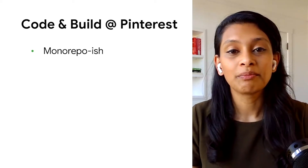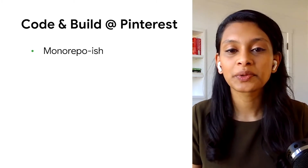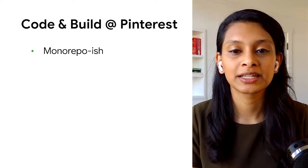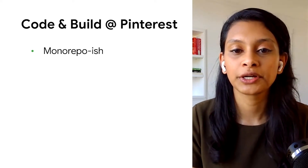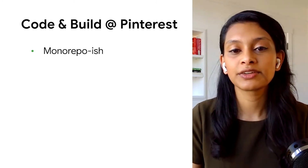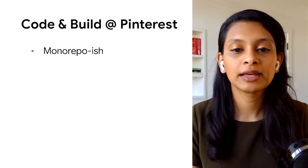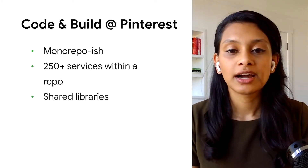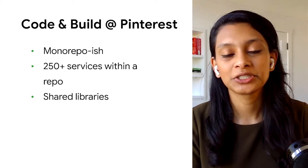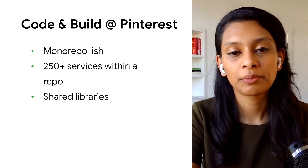Pinterest uses what I call monorepo-ish. Technically a monorepo is a single repository that stores all of your code and assets for every project, but what we have is a few repos grouped by language that are fairly large. For example, our Java monorepo houses 250 services with common code shared between those services, and this Java repo is actually where we first started our Bazel migration.